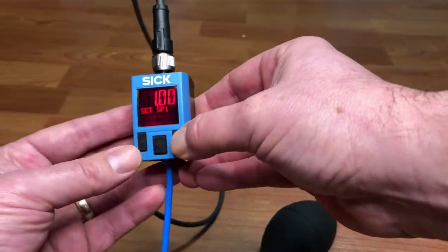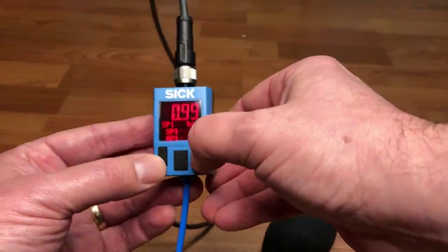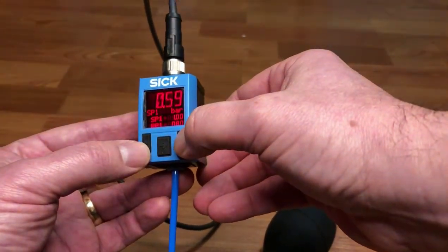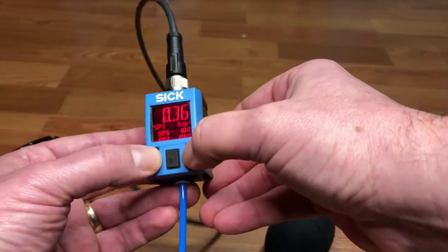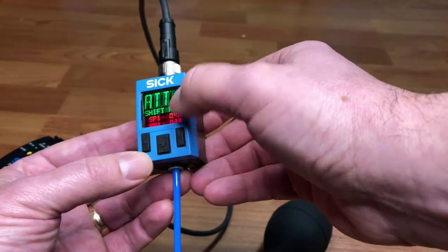Now here's set point one. We're going to press the middle key, the enter key, to go into that. We're going to use the up and down arrow key to select something—let's say 0.4 bar. We're going to hit the enter button in the middle.